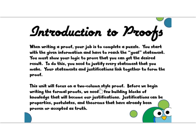This unit will focus on the two-column style proof, but we will also get familiar with the other two options. Before we begin writing the formal proofs, we need a few building blocks of knowledge that will become our justifications. We've been working on this already — our justifications are going to be properties, postulates, and theorems that have already been proven or accepted as true.